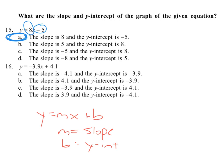And for this one, we see the coefficient of x is negative 3.9. That's the slope. And the y-intercept is whatever is at the end, plus b, which is 4.1. So we've got a slope of negative 3.9 and y-intercept of 4.1.